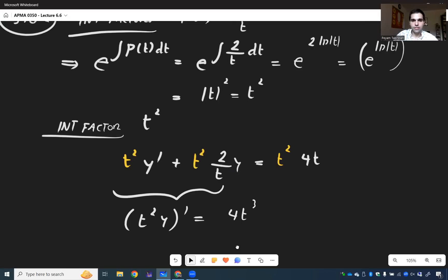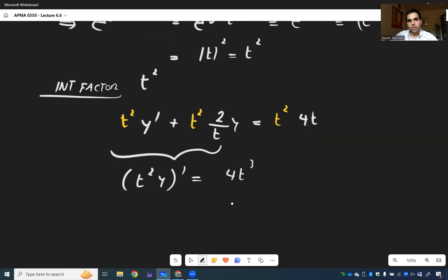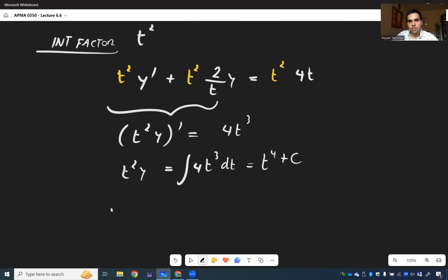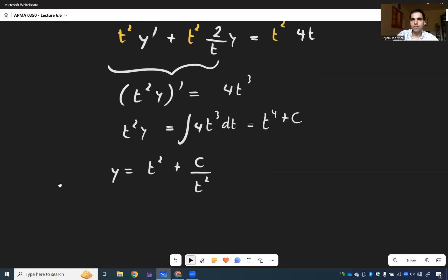And the rest is just integrating. So, t squared y is integral of 4t cubed dt, which is t to the fourth plus c. And then y, just dividing by t squared, then just becomes t squared plus c over t squared. And almost done.